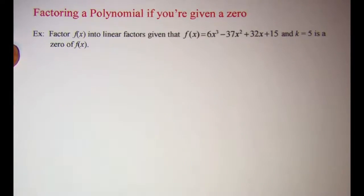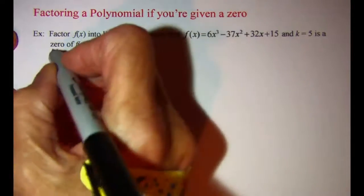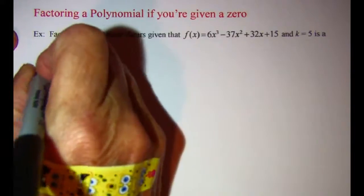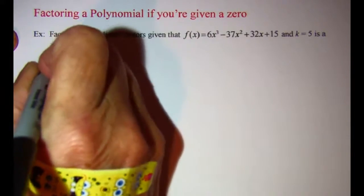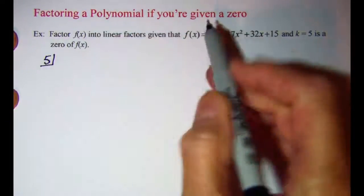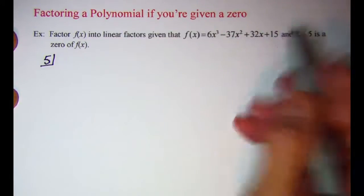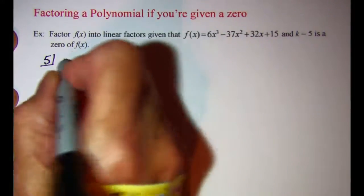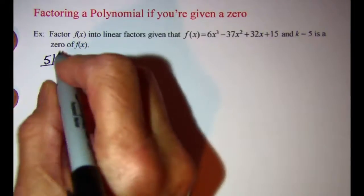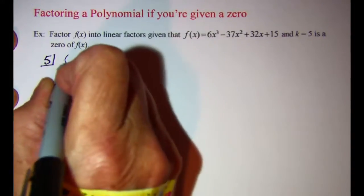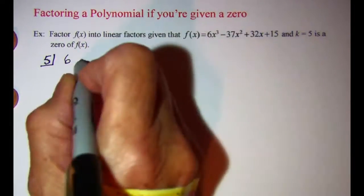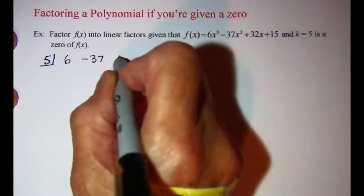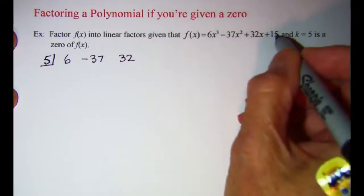So if we use synthetic division with k equal to 5, we have third degree, second degree, first degree, and constant, so we're not missing any terms. Let me list my coefficients: 6, negative 37, 32, and 15.